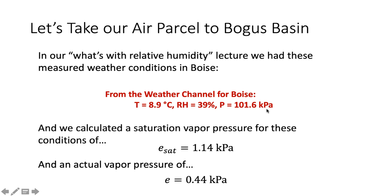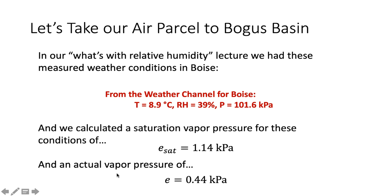We went through the process in that lecture of calculating a number of different things. We were trying to get a measure of specific humidity — an actual measure of the mass of water in every kilogram of air. Along the way, we computed two things of interest here: the saturation vapor pressure of 1.14 kilopascals, and the actual vapor pressure of 0.44 kilopascals. We're going to be using that actual vapor pressure of 0.44 kilopascals in particular.